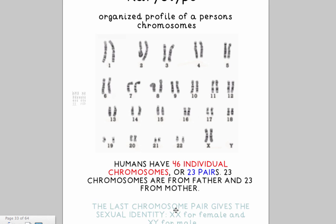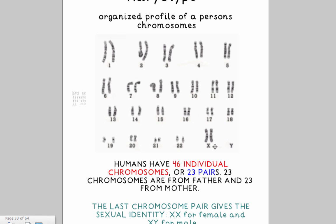We can also tell from a karyotype — which is an organized profile of a person's chromosomes — the sexual identity. In here you can see the last pair of chromosomes can either be an X or a Y, and these are designated names that do not mean that they look like an X or a Y, but have been designated for many generations and kind of like the name stuck.